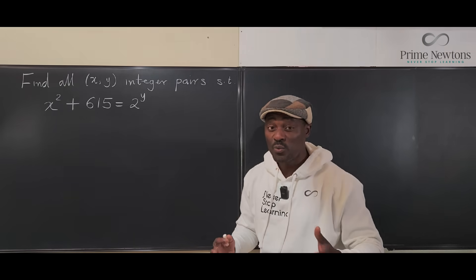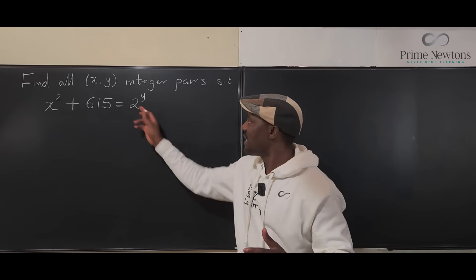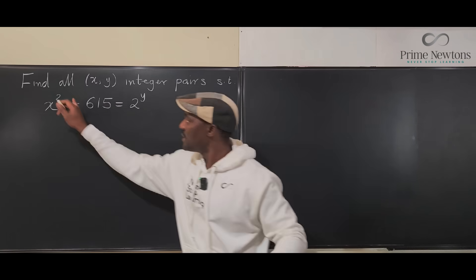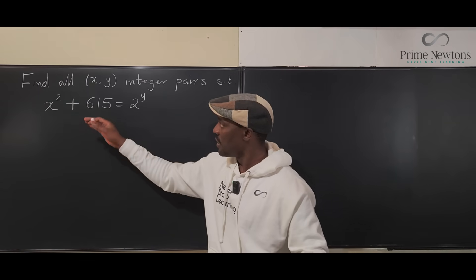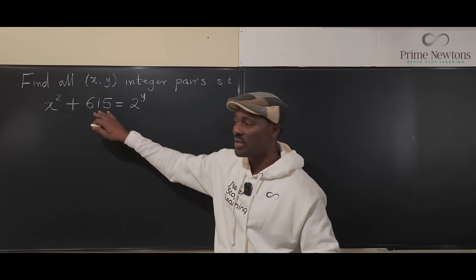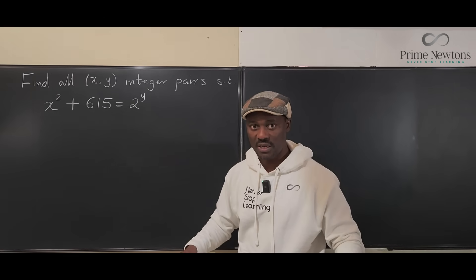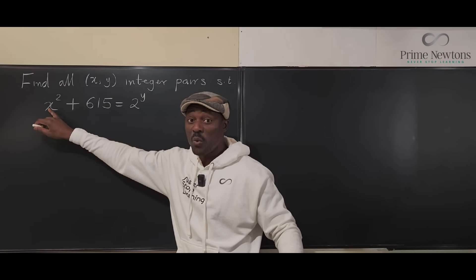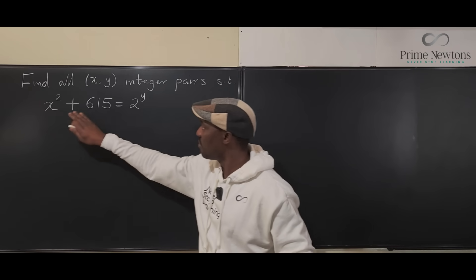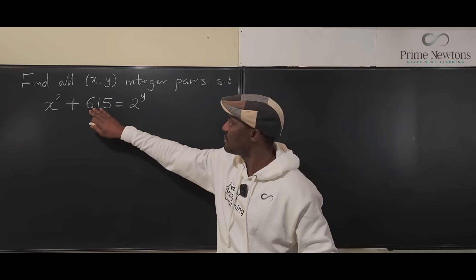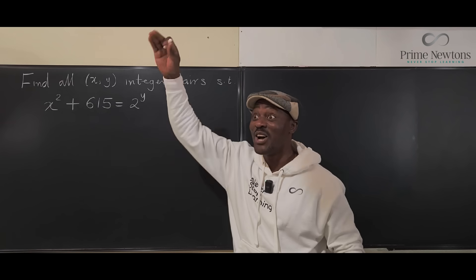So my very first thought would be, what is it that I could get on the right hand side? Look, this is a positive number. The square of any integer is positive. So a positive number plus 615 has a minimum of 615. That's if this is zero. But we know this is not zero because if this is zero, then zero plus this is 615, and 615 has to be a power of 2. But we know 615 is not a power of 2.